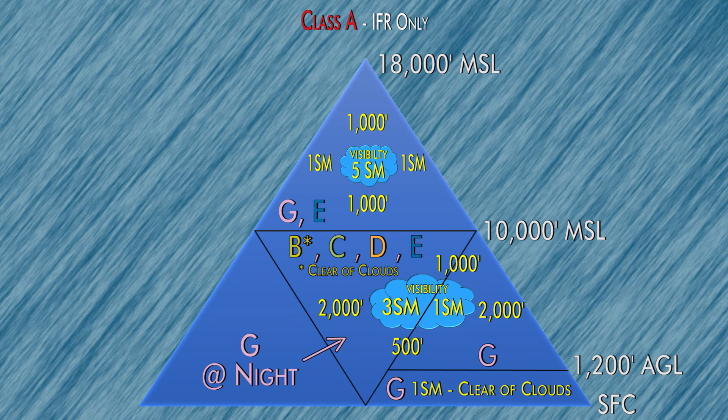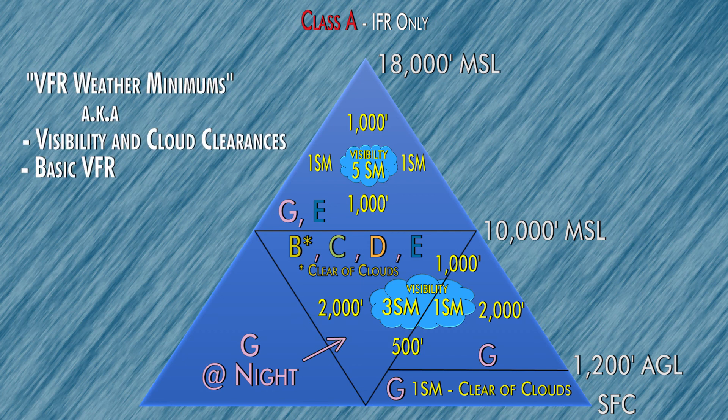If you can remember this triangle, you're going to be set for about 90% of what we have to talk about today. So get this written down, remember it, practice it a couple times. You might hear VFR weather minimums in flight referred to as clouds and visibility clearances, or basic VFR — it all means the same thing: how far do you have to be away from clouds, and how much visibility do you need in order to be VFR when you're flying?